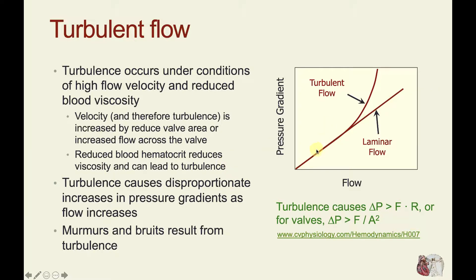Let's look at this in a more quantitative fashion with this graph. I have plotted the pressure gradient across the valve as a function of flow across that valve. If the valve has low resistance, we will have laminar flow conditions and essentially a linear or Newtonian relationship between the pressure gradient and the flow. But if we have a narrowed valve, because we'll have much higher velocities, once we achieve a certain flow rate, we might suddenly get a departure from that linearity, such that there is a disproportionate increase in the pressure gradient as flow increases.